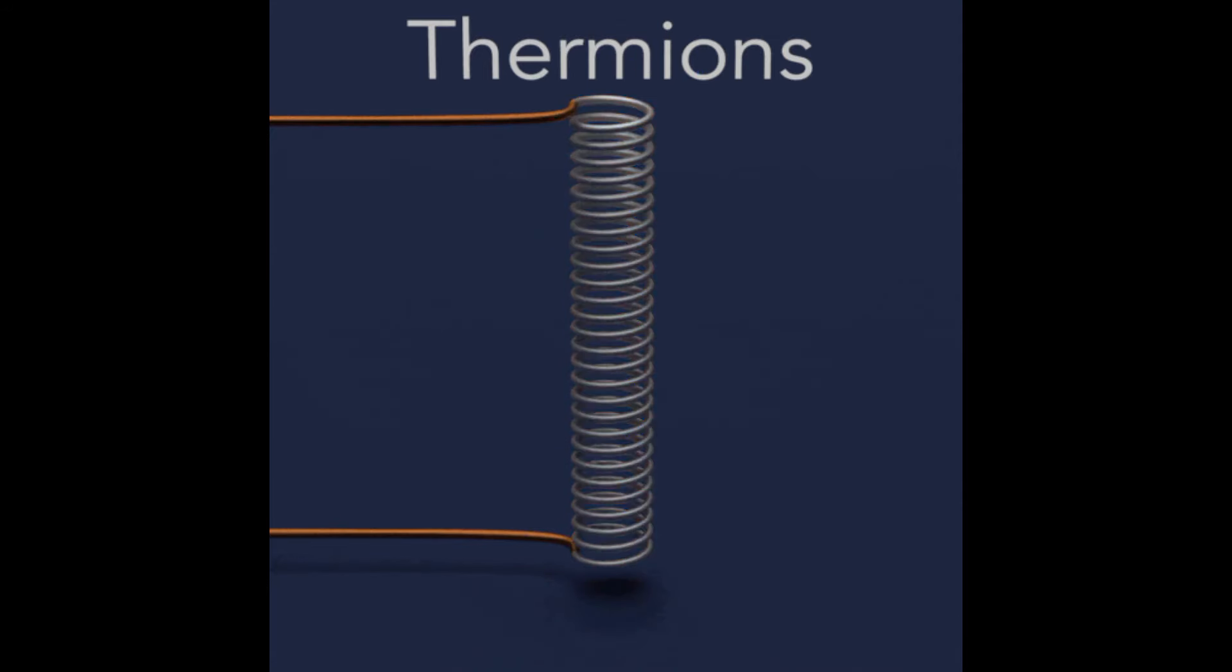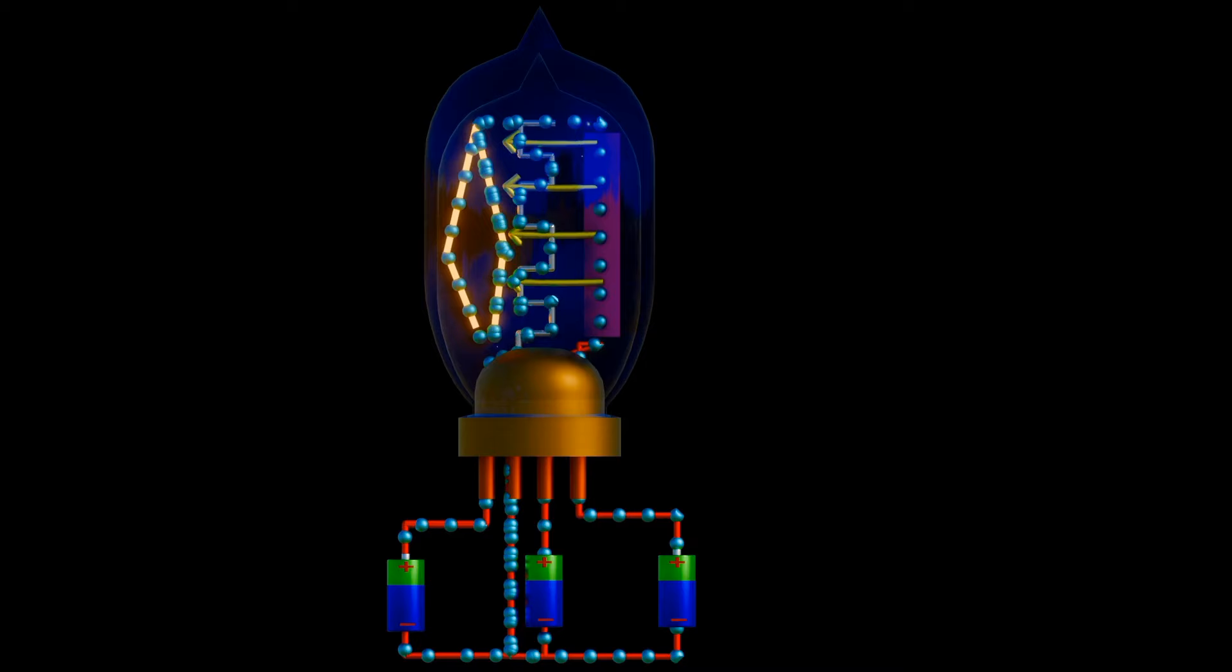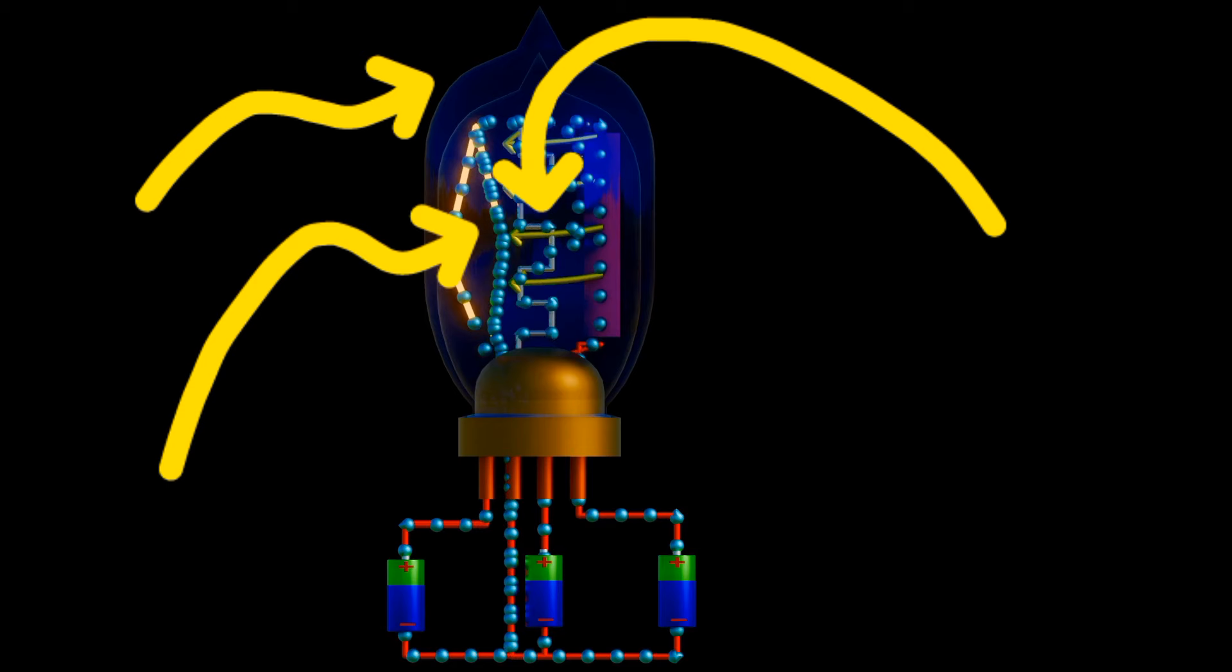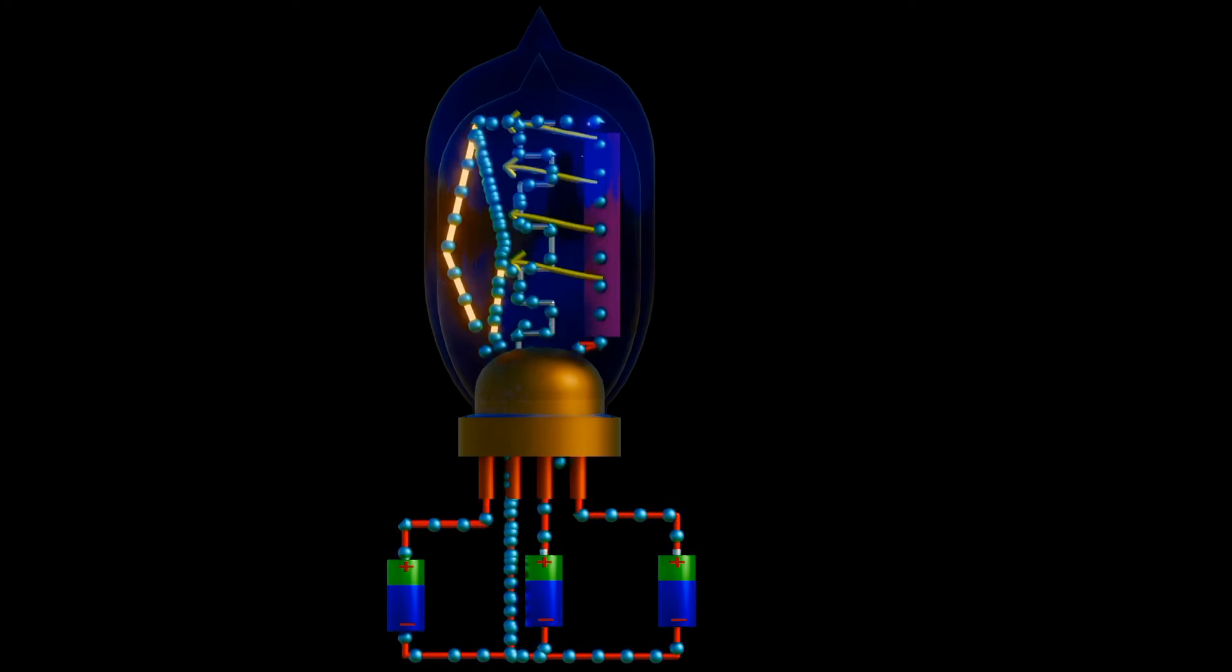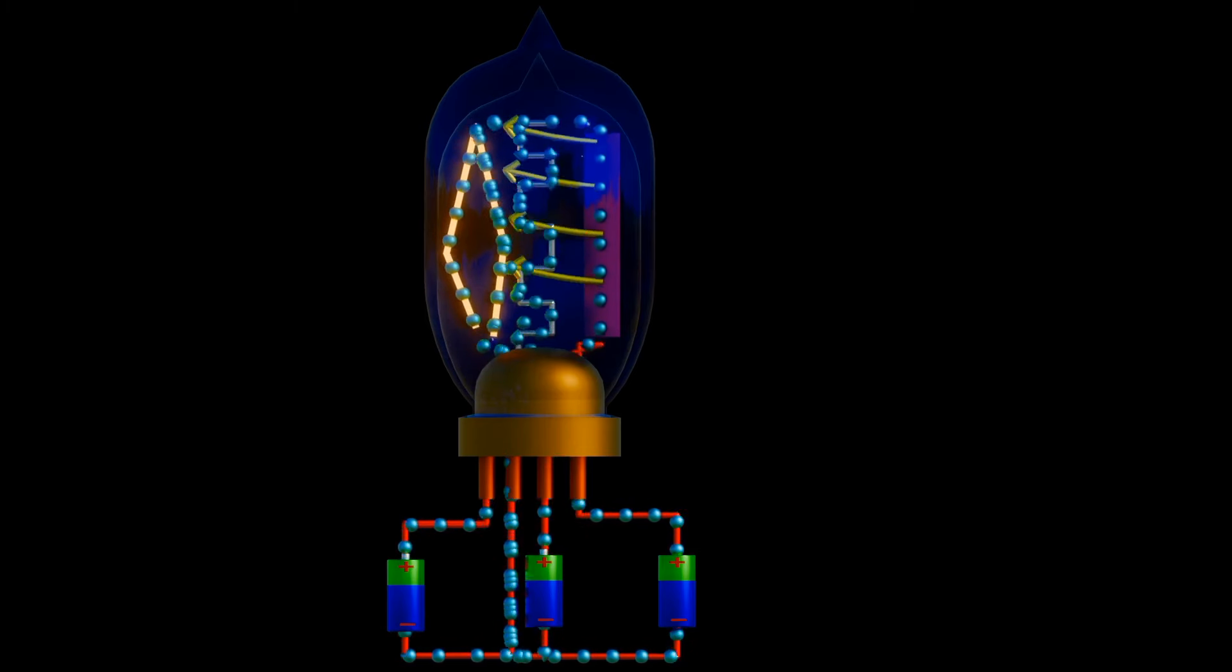The heated filament caused electrons to be emitted and they were collected by the wire. Early tubes mimicked Edison's configuration, which used a glass housing, a filament to provide electrons and an anode or plate operating at a positive electrical charge to collect emitted electrons.